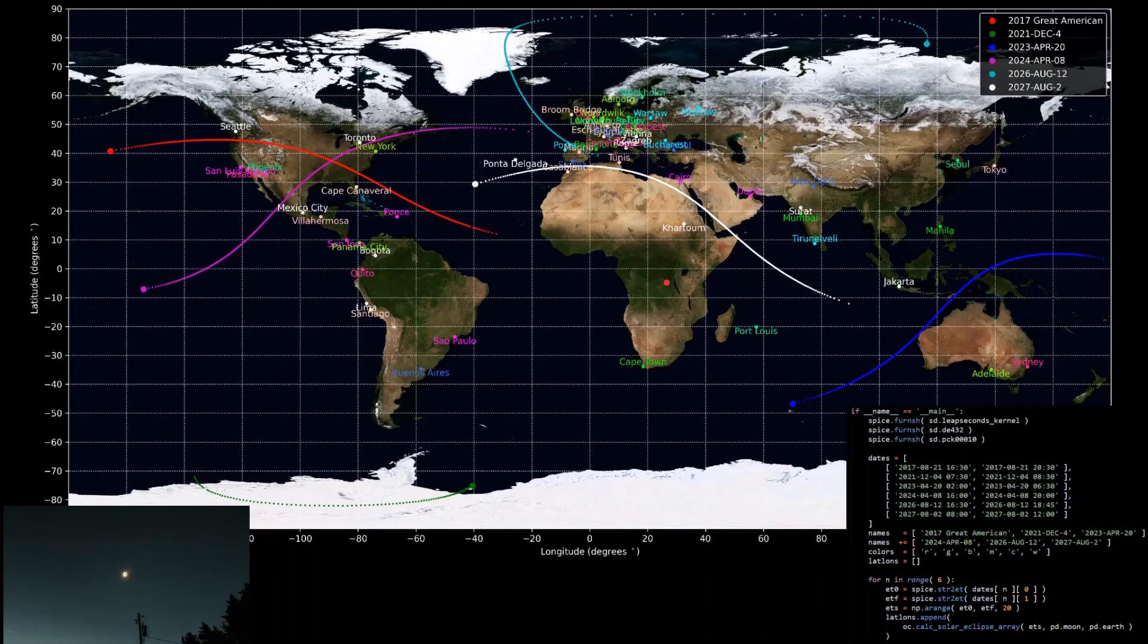Implementing these functions and values in Python, we get these plots, which include the great American eclipse in red that I actually got to see in person in Oregon, which was awesome. And I highly recommend if you ever have the chance to see one, you absolutely should, because obviously this picture doesn't do it justice.